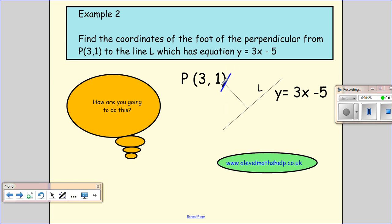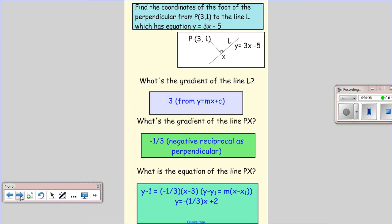It's perpendicular to our line L. To find the coordinates where these two lines cross, we need to find the line PX. To find the equation of the line, we're going to use this formula, so we need a point and the gradient. We've already been given a point on our line, but we do need to find the gradient.